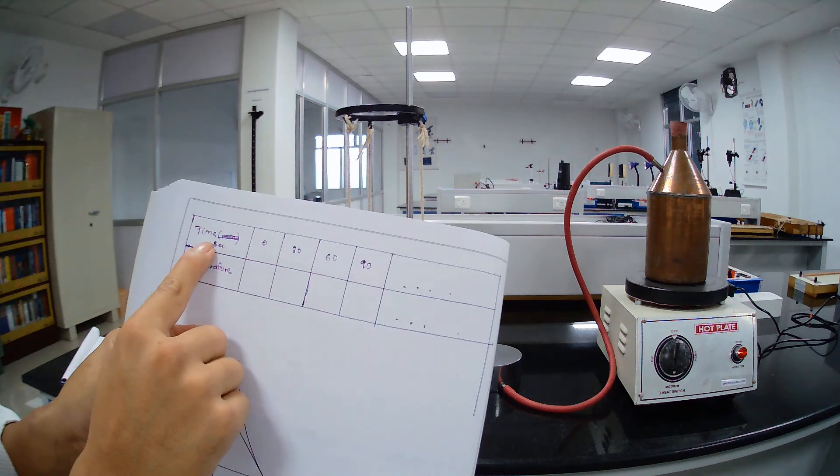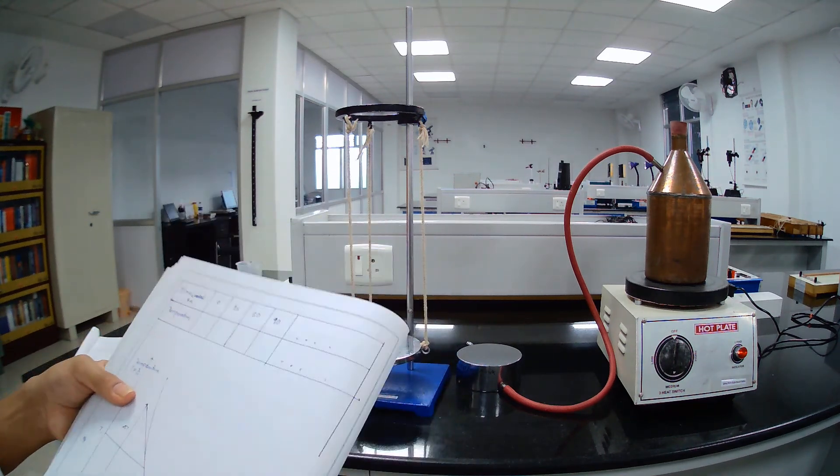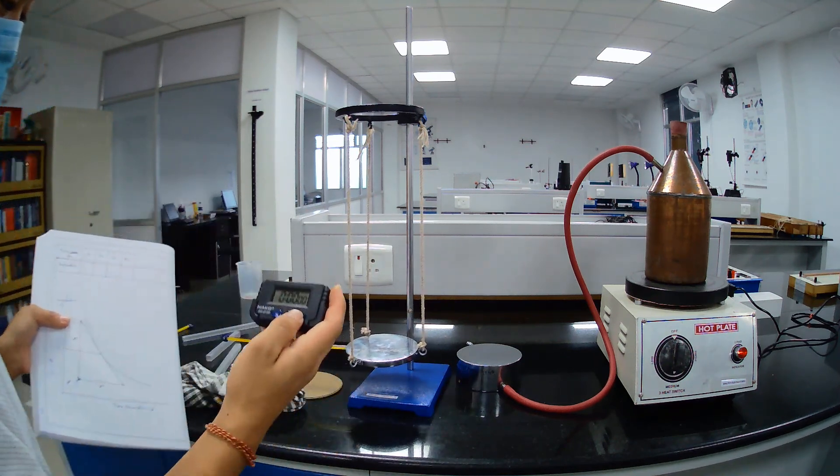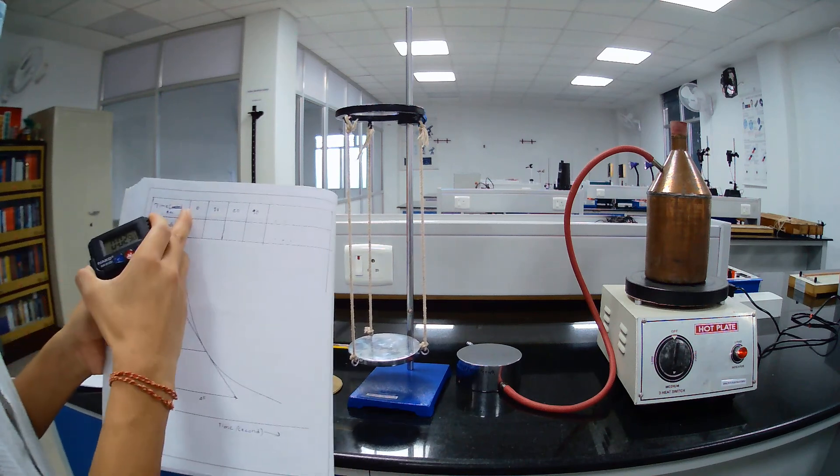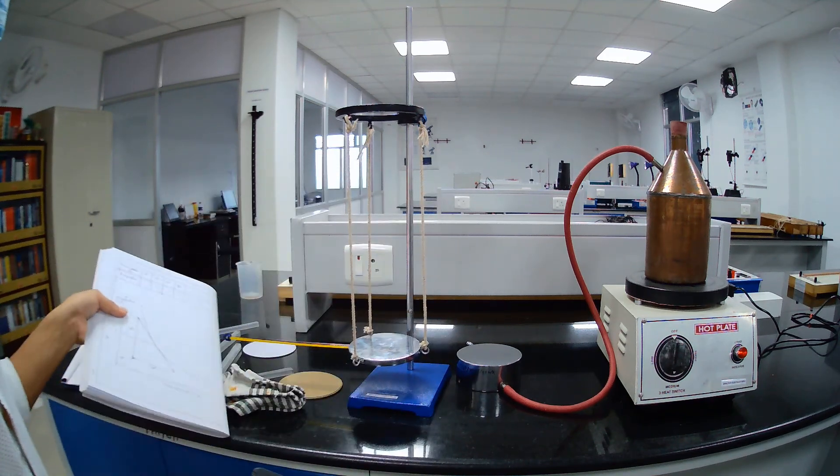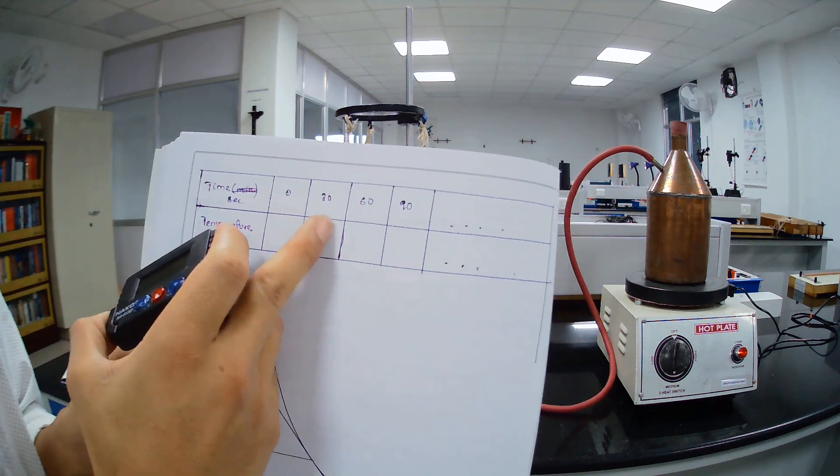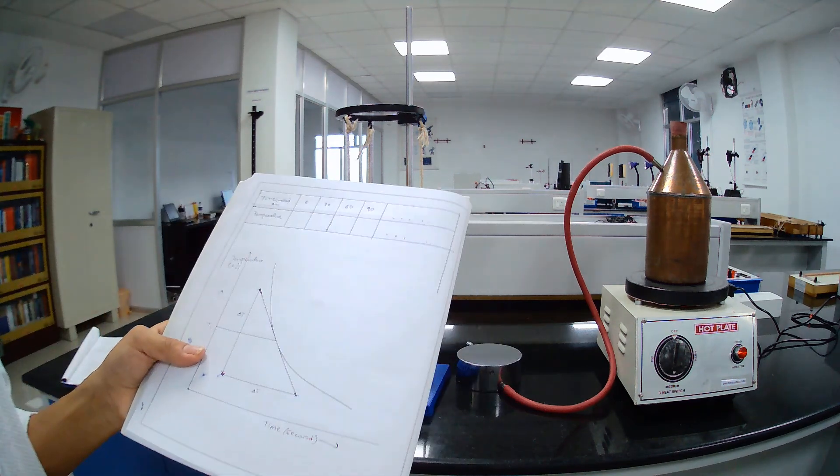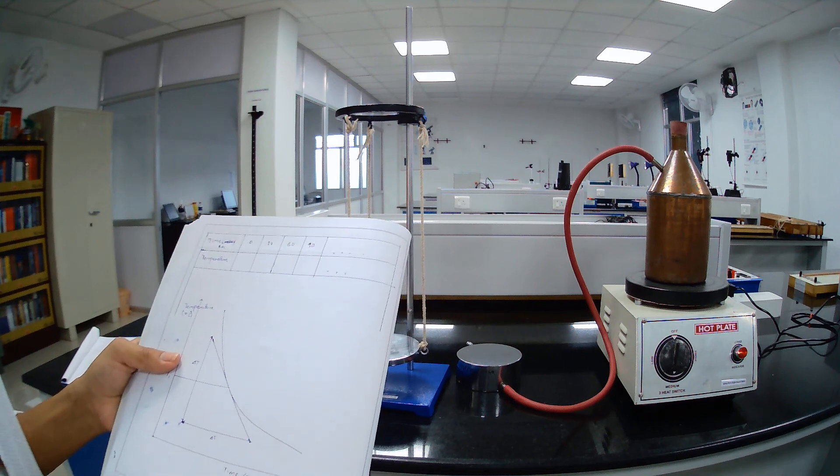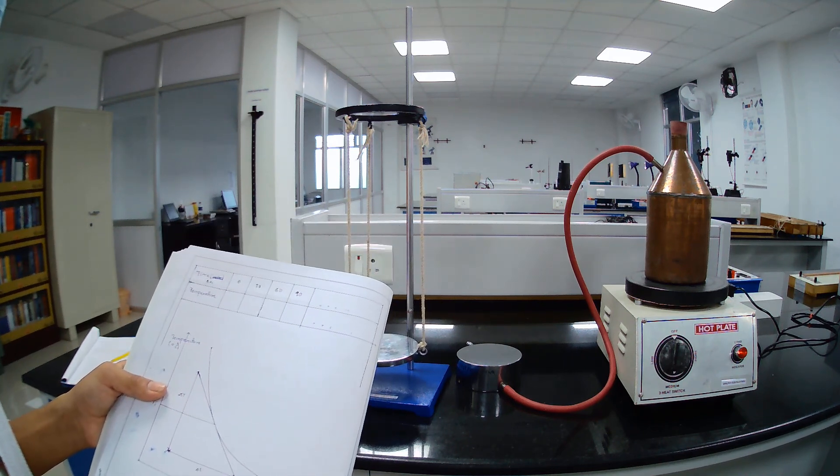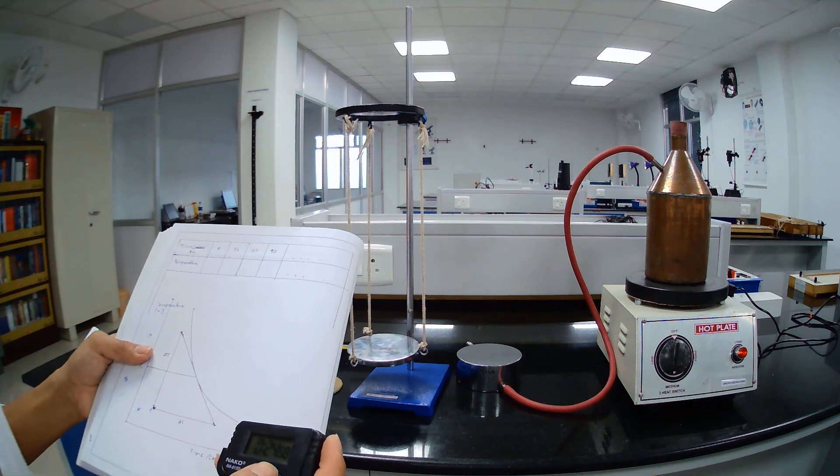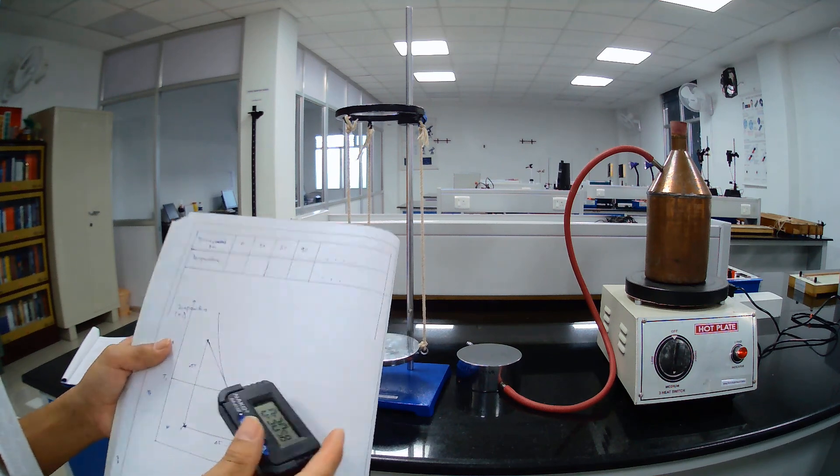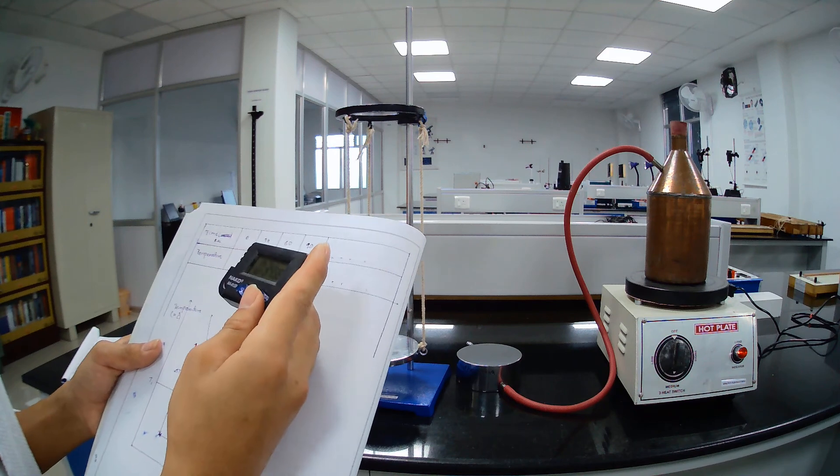In this table we have time and temperature. Immediately after putting this out, here at t equals to zero, note down the temperature. After interval of 30 seconds, we have to note down temperature of these disks and take this reading for 3 minutes.